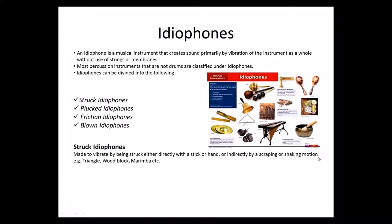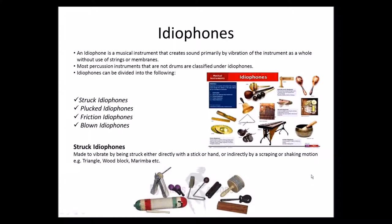The first one we look at is struck idiophones. They are made to vibrate by being struck either directly with a stick or a hand, or indirectly by a scraping or shaking motion. For example, the triangle, the wood block, and marimbas.